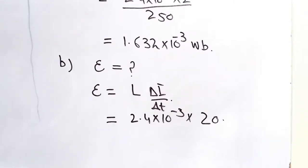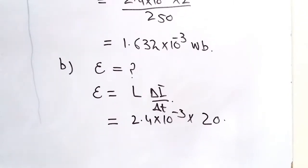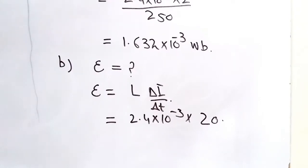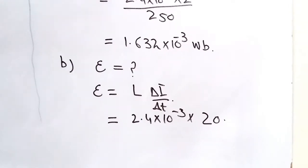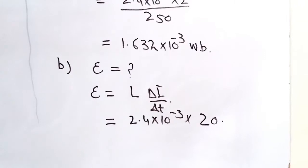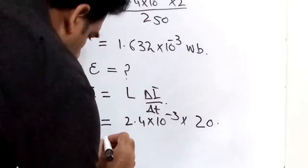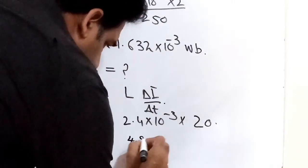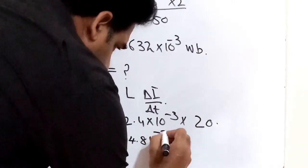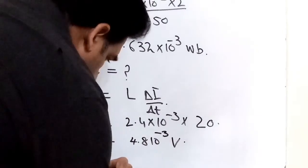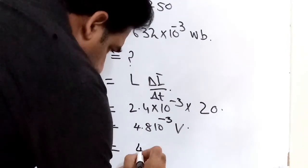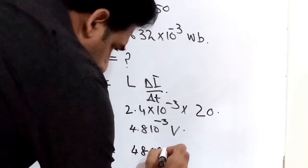2.4 multiply by 20 equals 4.8, which is 4.8 times 10 to the power minus 3 volts, and we write it as 48 millivolts.